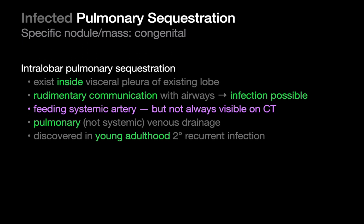Pulmonary sequestrations can be divided into intralobar and extralobar sequestrations. Intralobar sequestrations exist within the visceral pleural envelope of an existing lobe of lung. They often do communicate with the rest of the tracheobronchial tree, though that communication will not be totally normal airway. This means intralobar sequestrations can communicate with the outside environment, making them at risk of becoming infected, especially since the airways that supply and drain them are not quite normal. The specific feature of an intralobar sequestration is the feeding systemic artery.